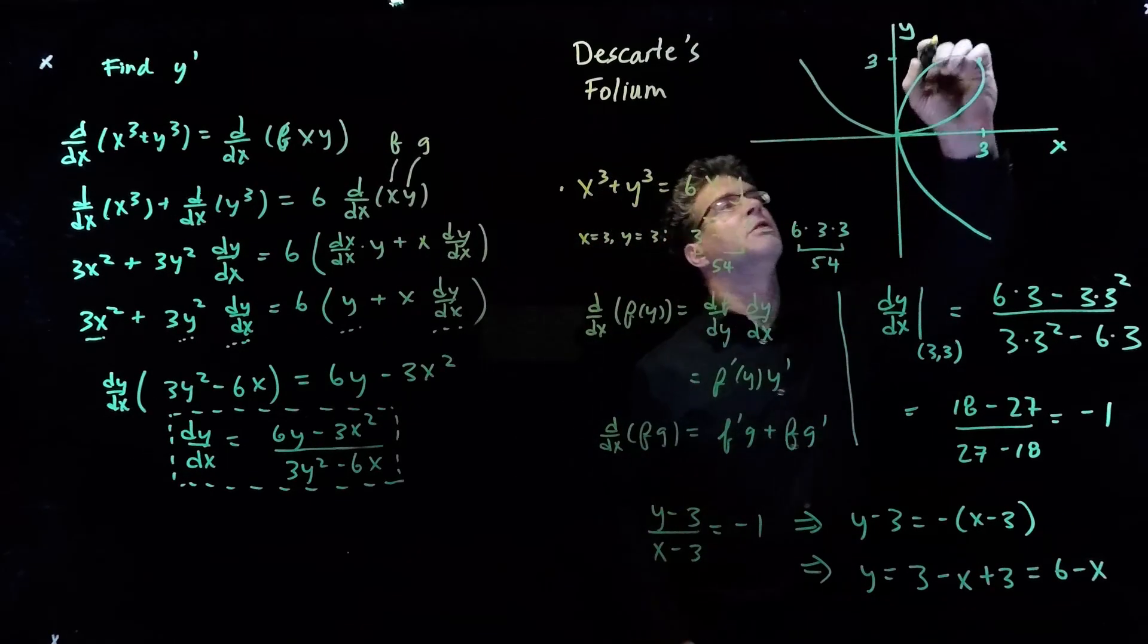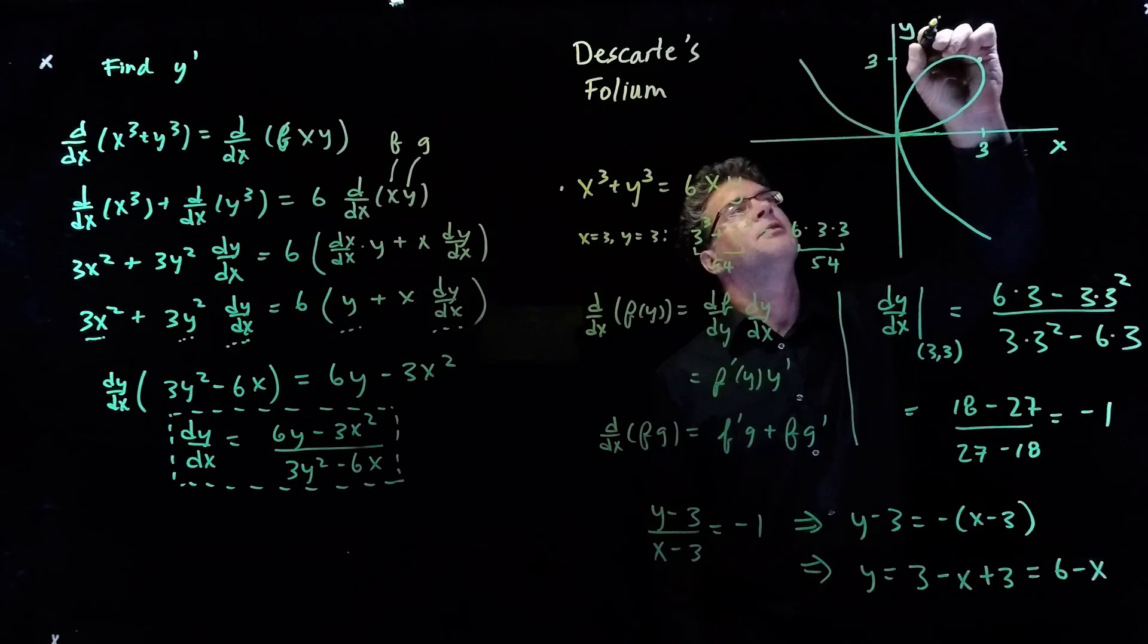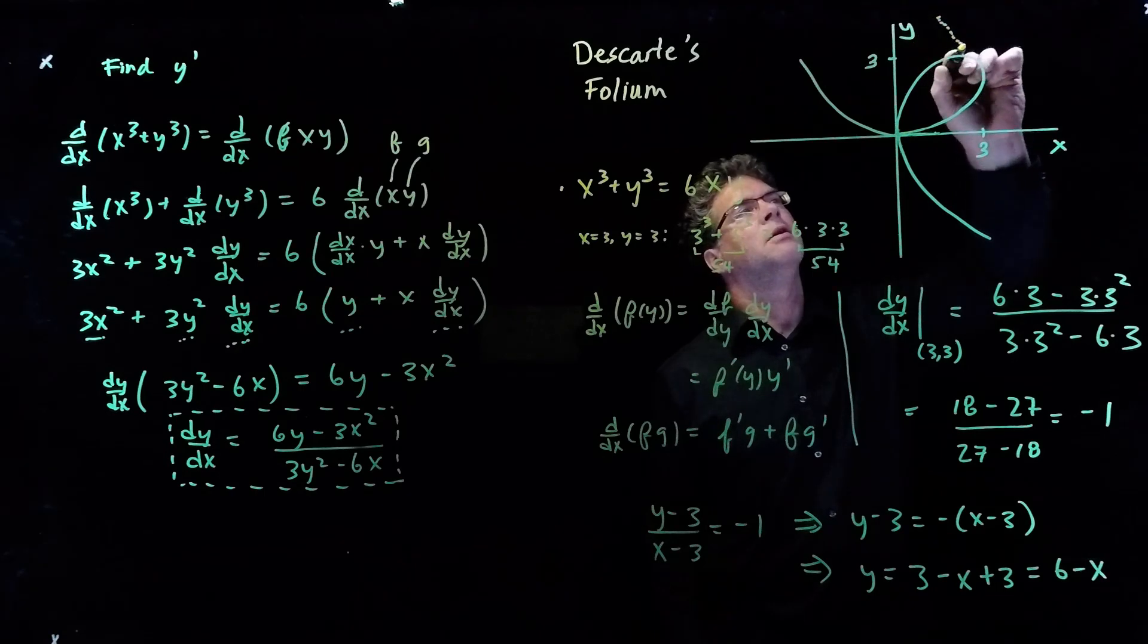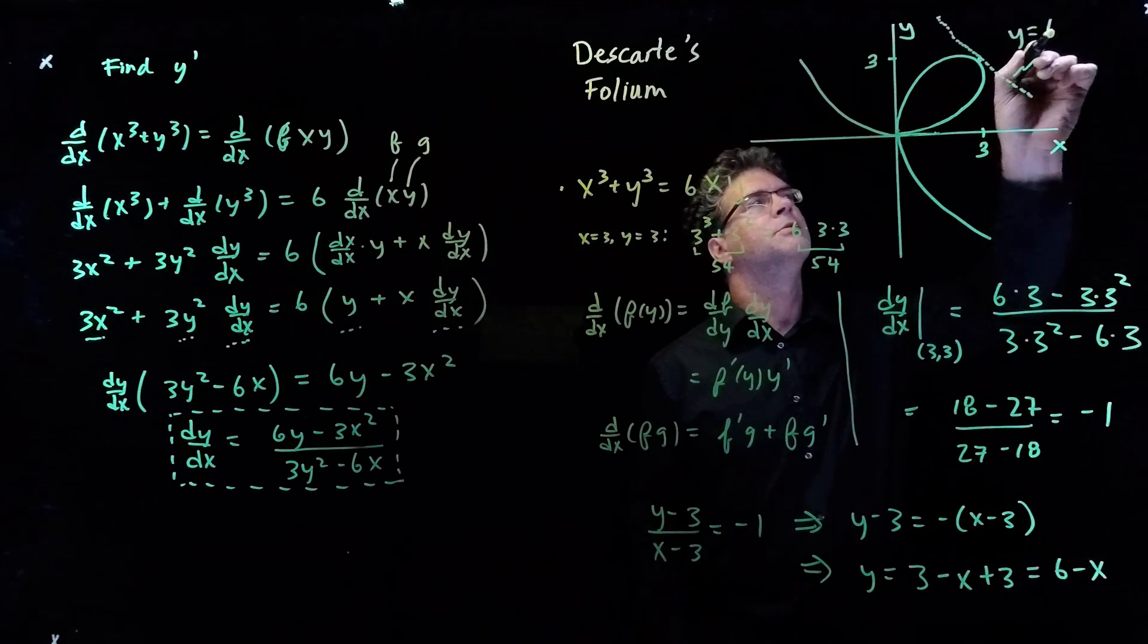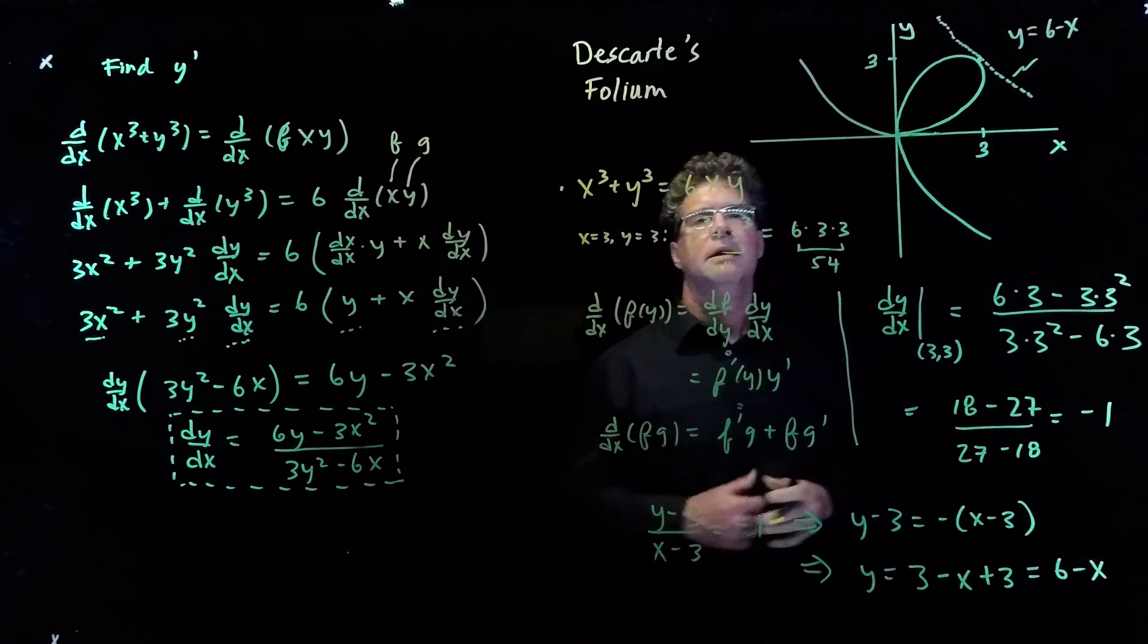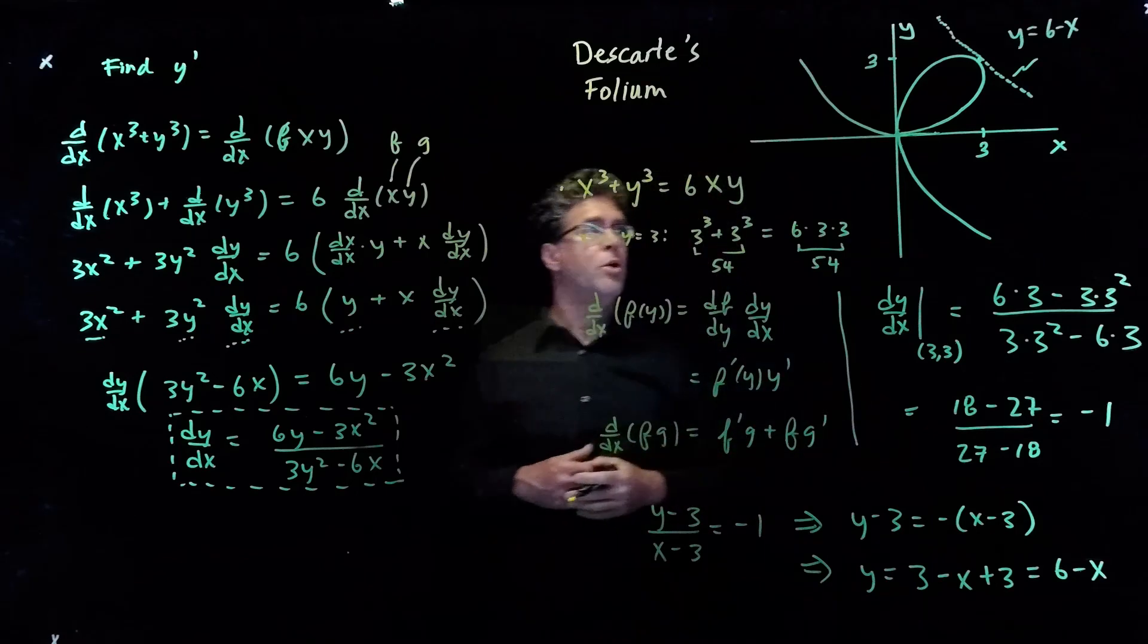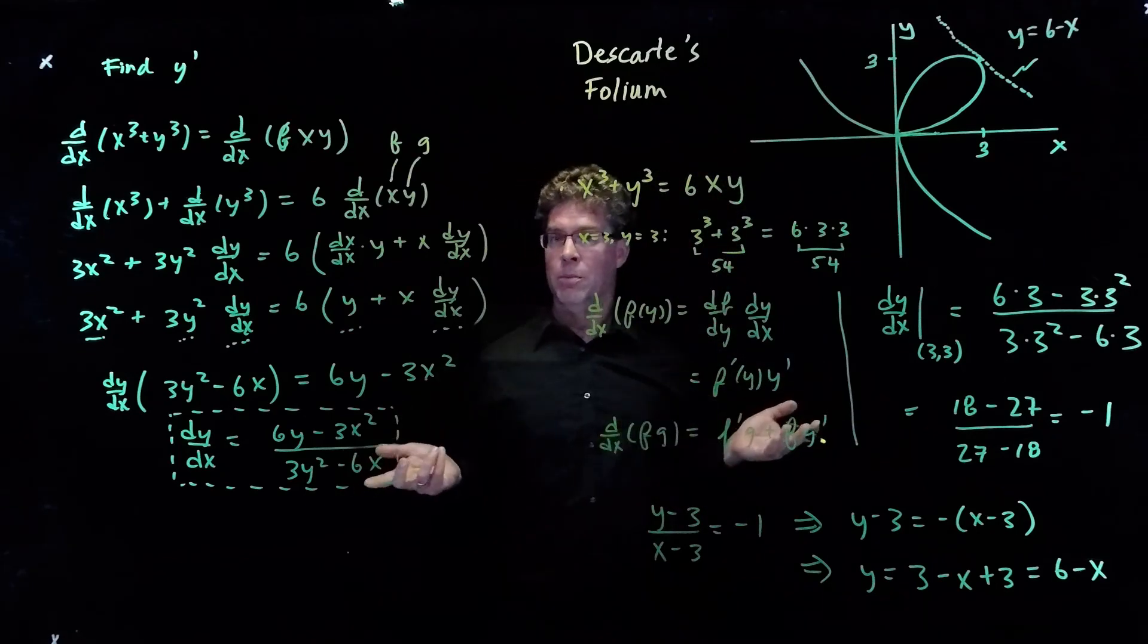And so the formula for this line here is quite simple after all that work. It's simply y is equal to 6 minus x. And that's the tangent line at the point 3, 3 on the folium of Descartes.